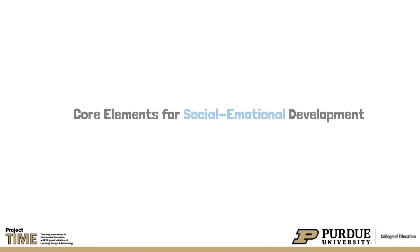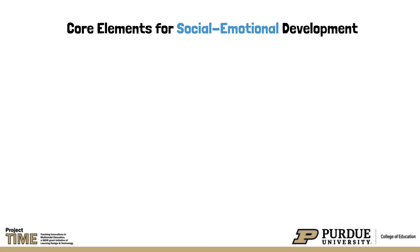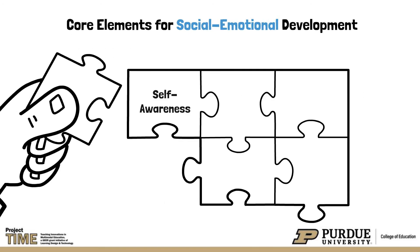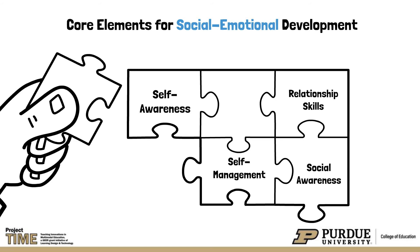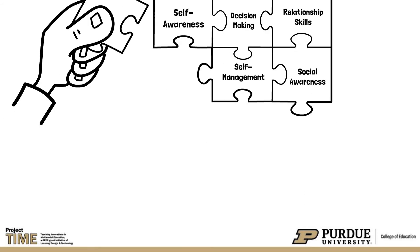Five core elements for social-emotional development are self-awareness, self-management, social awareness, relationship skills, and responsible decision-making.